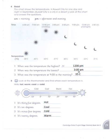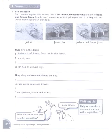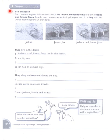Now we go on to page number 30, Cambridge Global English Stage 3 Activity Book, Unit 3, page 30. The worksheet is Desert Animals.